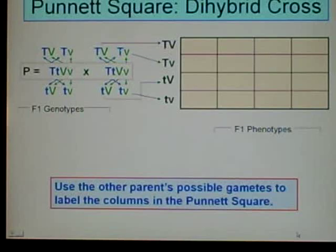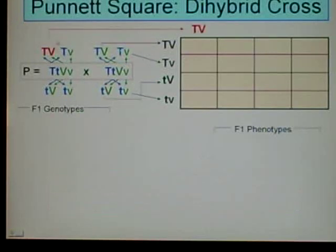Now we'll use the other parent's possible gametes to label the columns in the Punnett square. The first allele combination we came up with goes in the first column, the second in the second, third in the third, and fourth in the fourth. What order you apply these in doesn't really matter, as long as all four of these come from one parent and all four of these come from the other parent.